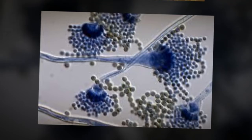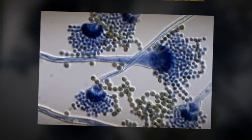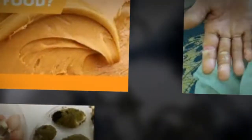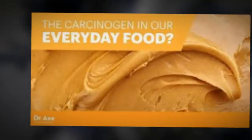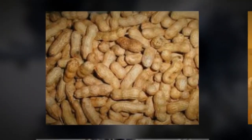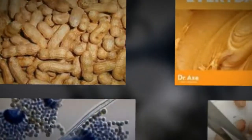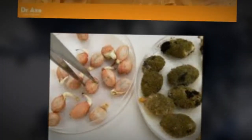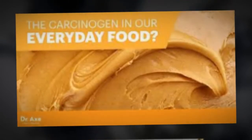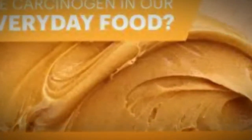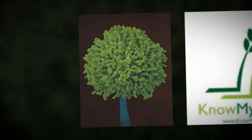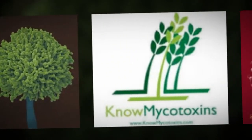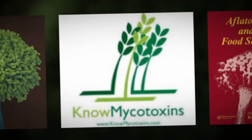There is a saying: the enemy lies nearby and within. Aflatoxins are such enemies which lie in very near proximity — in our food, on our skin, on our pet animals, in our environment, and so on. Aflatoxins are a major concern since they are potent cancer-causing agents, which in medical terms are called carcinogens.